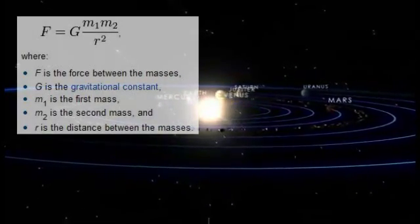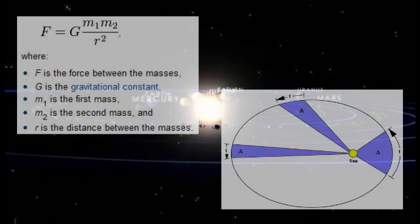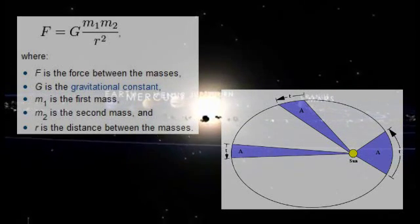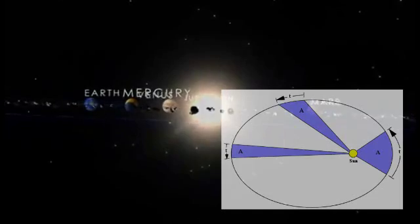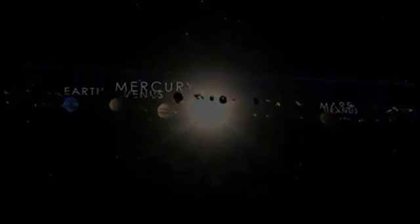We still use Newtonian physics, even though Einstein refined and improved upon it. That's because Newton's laws of motion are very close to what we observe, especially on a local scale.